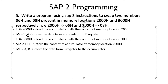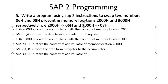Now if we store the content of the accumulator at memory location 3000H, the swap will be complete. We use the STA instruction: STA 3000H, which stores the content of the accumulator — 06H — at memory location 3000H. This completes the swap: 06H is now stored at address 3000H.